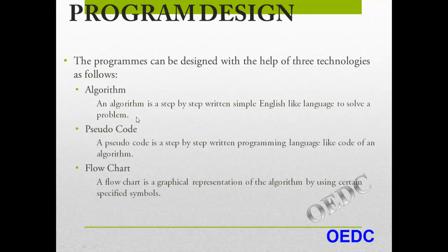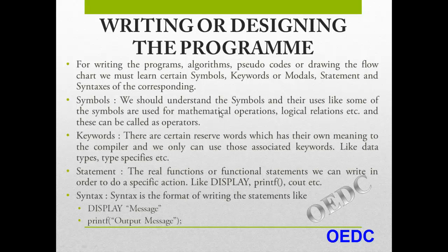There are certain symbols we can use in a flowchart. These all are required to solve a problem with pen and paper. These programming design technologies — for writing or designing a program, for writing the algorithm codes or drawing the flowchart — we must learn certain symbols, keywords, modals, statements, and syntaxes corresponding to writing any algorithm, codes, or flowchart.